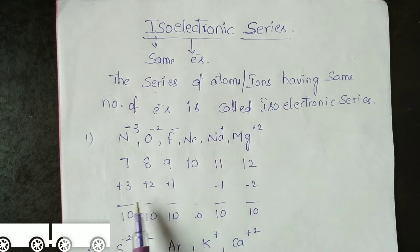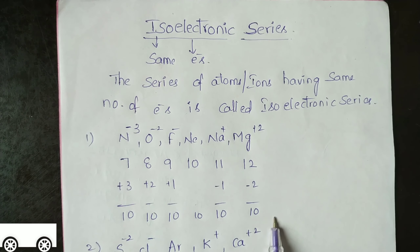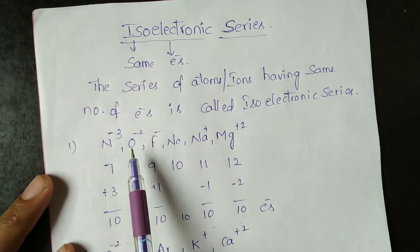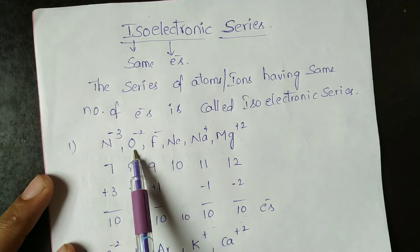Isoelectronic series. 'Iso' means same. The series of atoms or ions having the same number of electrons is called an isoelectronic series. N³⁻, O²⁻, F⁻, Neon, Na⁺, Mg²⁺ shows an isoelectronic series.